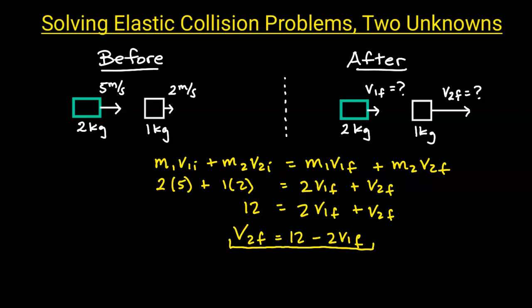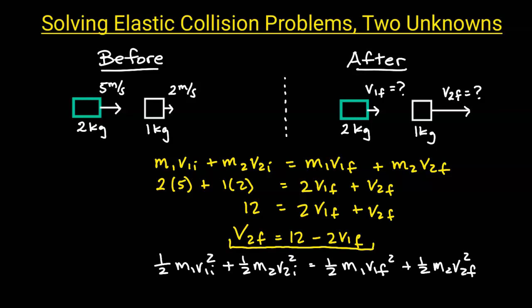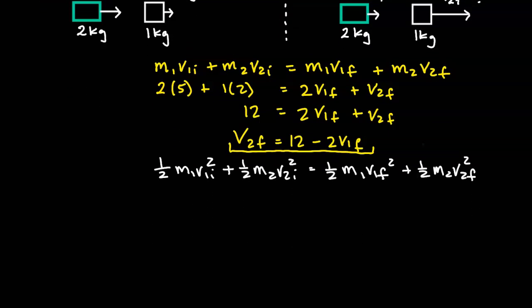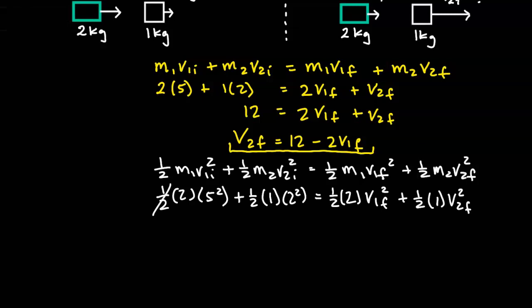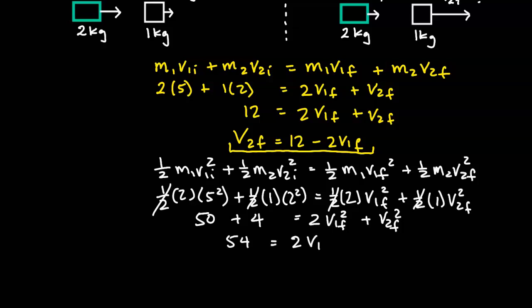Next we're going to write an equation showing that kinetic energy is also conserved in an elastic collision. We substitute our masses and velocities into this equation. Notice that the one-halves all cancel out, leaving us with 50 plus 4 equals 2*v1_final squared plus v2_final squared. Combining terms on the left, we get 54 equals 2*v1_final squared plus v2_final squared.